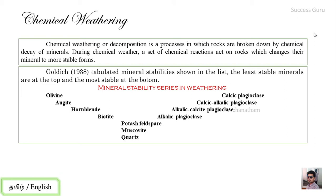This is the Goldich stability series. If you look at this series, you can see the Bowen's Reaction Series. Looking at the stages of development of minerals — from the first to the last — you can observe the Bowen's Reaction. The minerals at the top of the series are first to be decomposed, while the minerals at the bottom are retained and most stable.